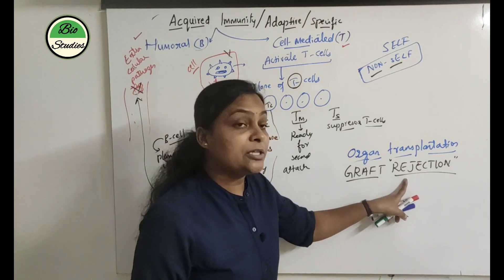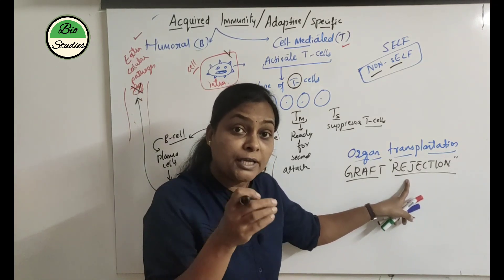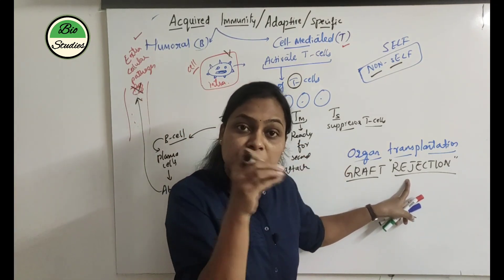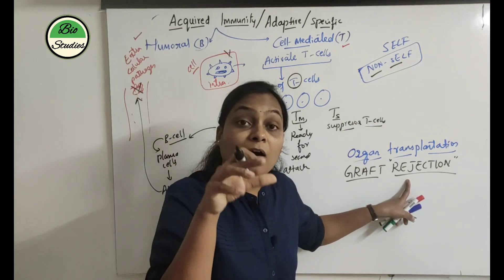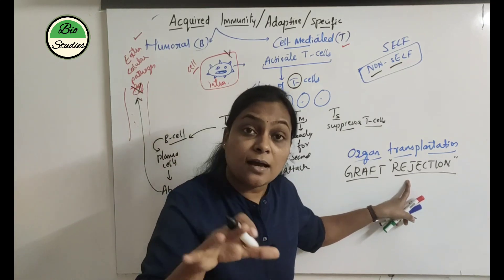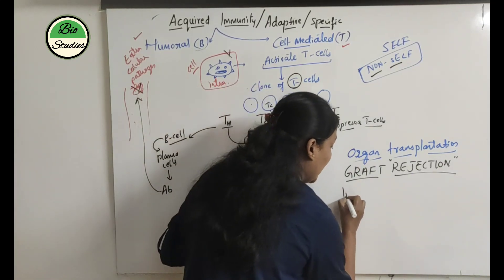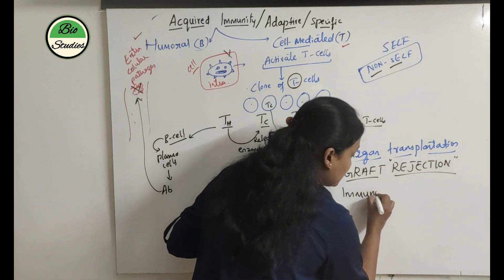When the body is fully stimulated and starts graft rejection, doctors administer immunosuppressants to suppress the immune response and allow the transplanted organ to function.